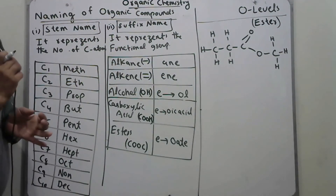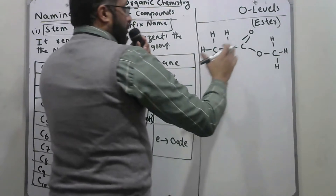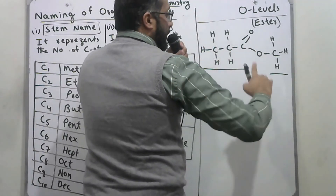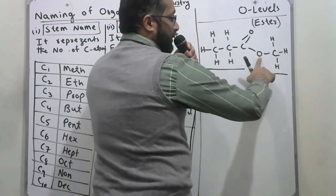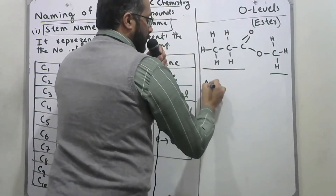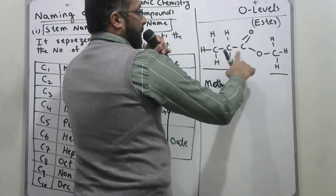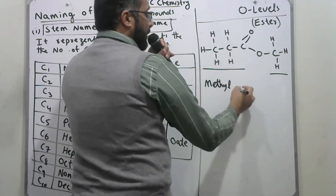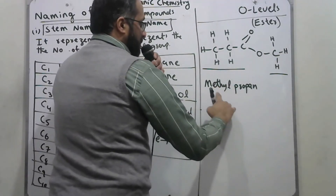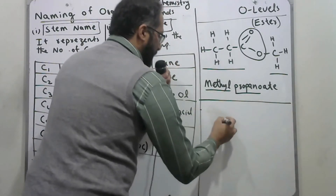When writing the name of an ester, count how many carbons are directly bonded with oxygen — treat those as a branch. Here there is one carbon bonded to oxygen, so from 'methane' we get 'methyl'. The remaining chain has 1, 2, 3 carbons — three carbons gives 'propane'. Replacing 'e' with 'oate' for esters, the name is 'methyl propanoate'.